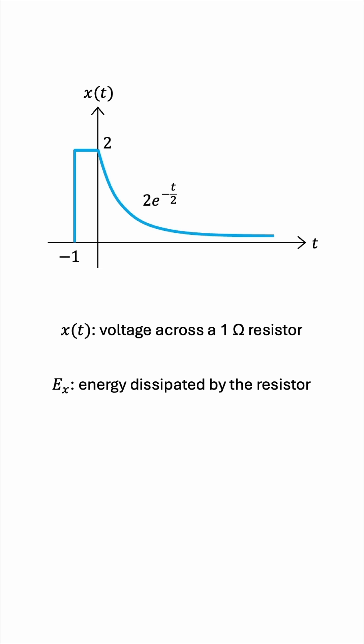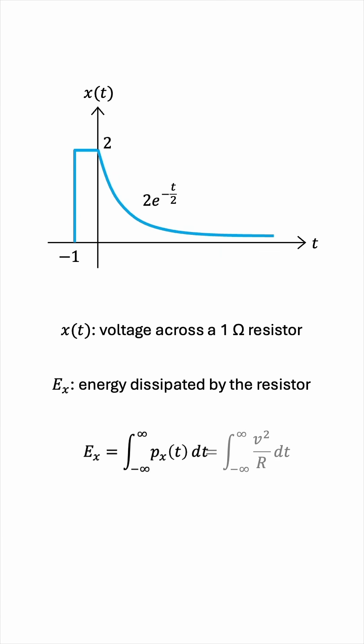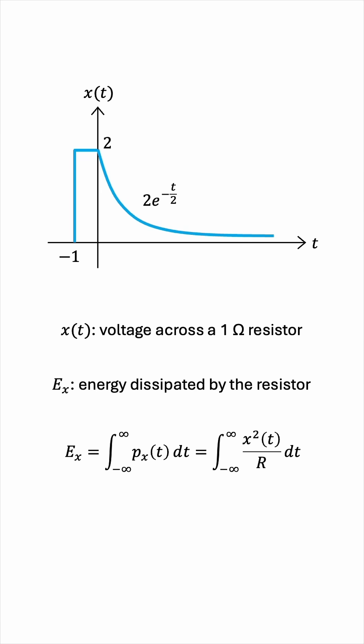So how do we come up with a formula for energy? Well, we know that power is the rate of energy transfer, so energy must be the accumulation of power — that is, the integral from negative infinity to infinity of the power, p_x. And we know that power is defined as v squared over r. In this case, we're defining the voltage to be the signal x of t, and the resistance by definition is 1 ohm. So this gives us the formula for the energy of the signal.